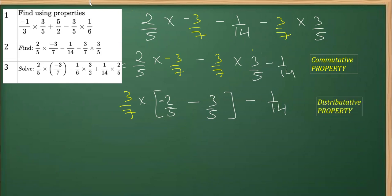And in the next part, this is 3/7 multiplied by, if I simplify this clearly then same is 5 only, so -2 minus 1 is -3. So it will give you -3/5 and -1/14.